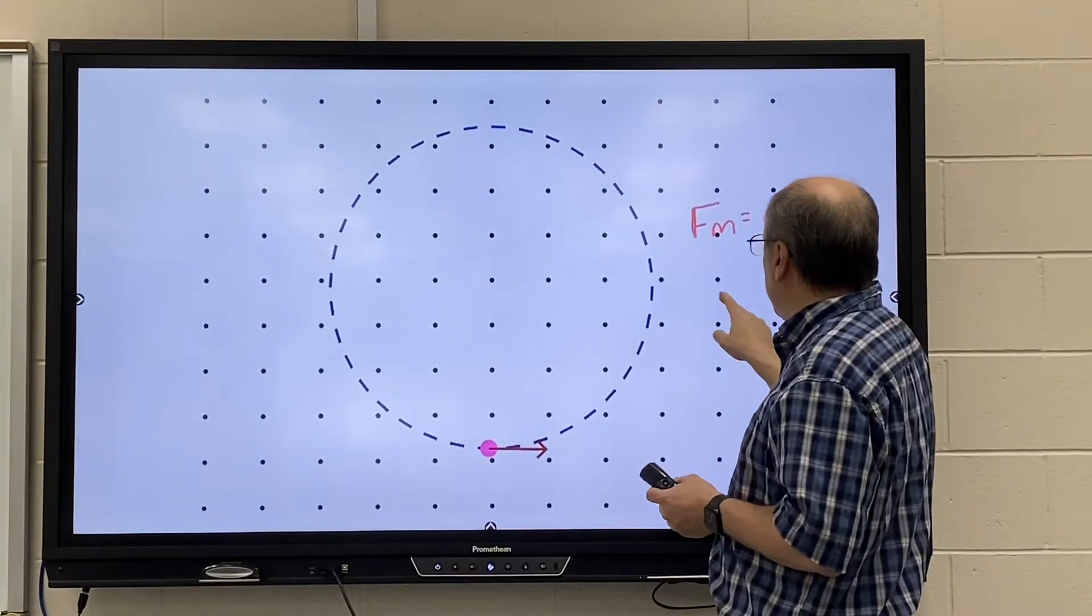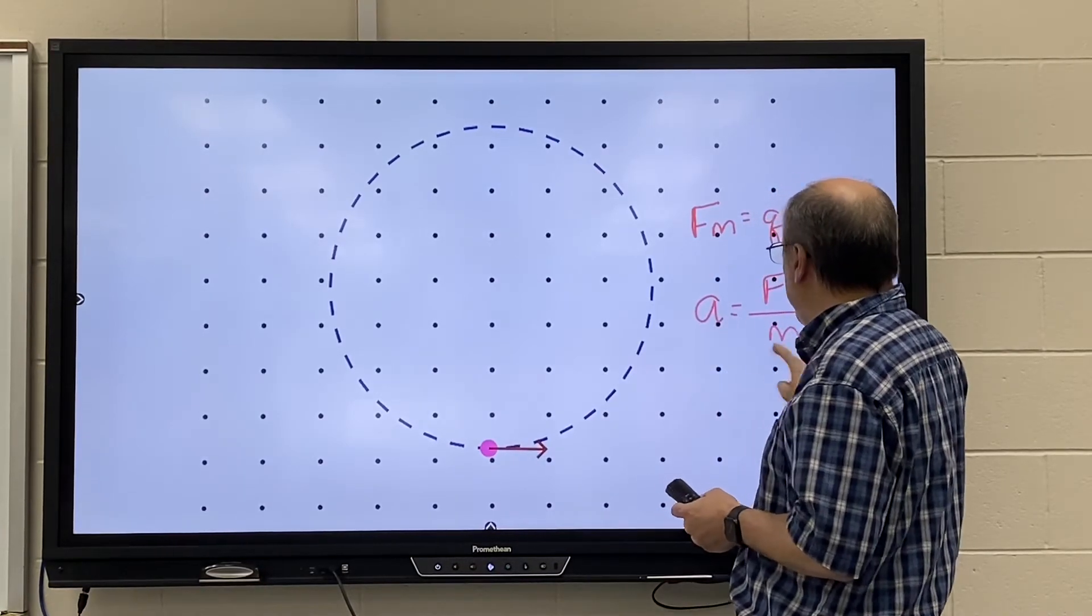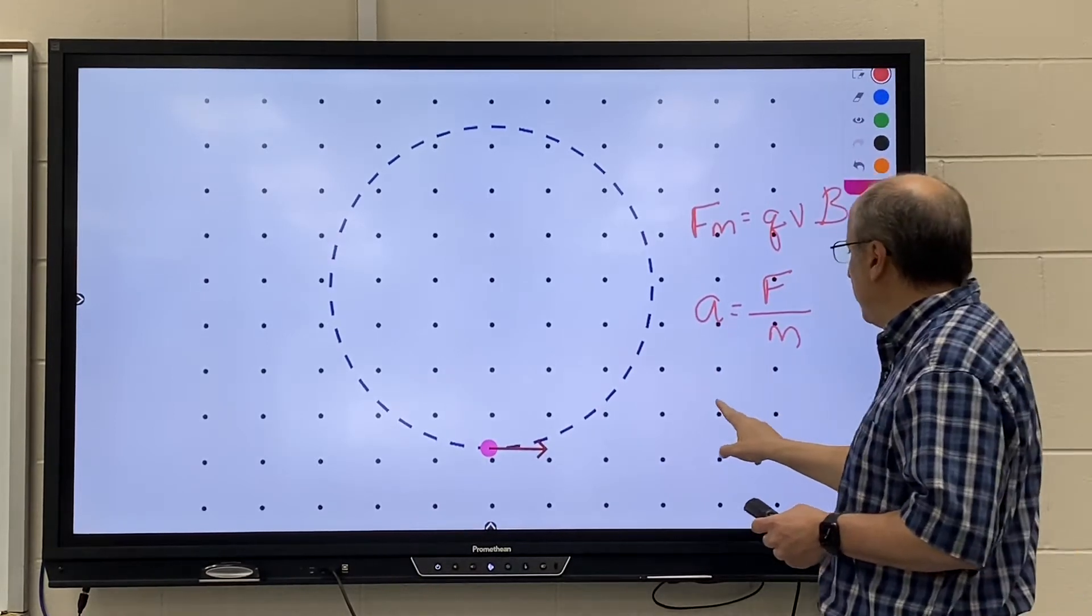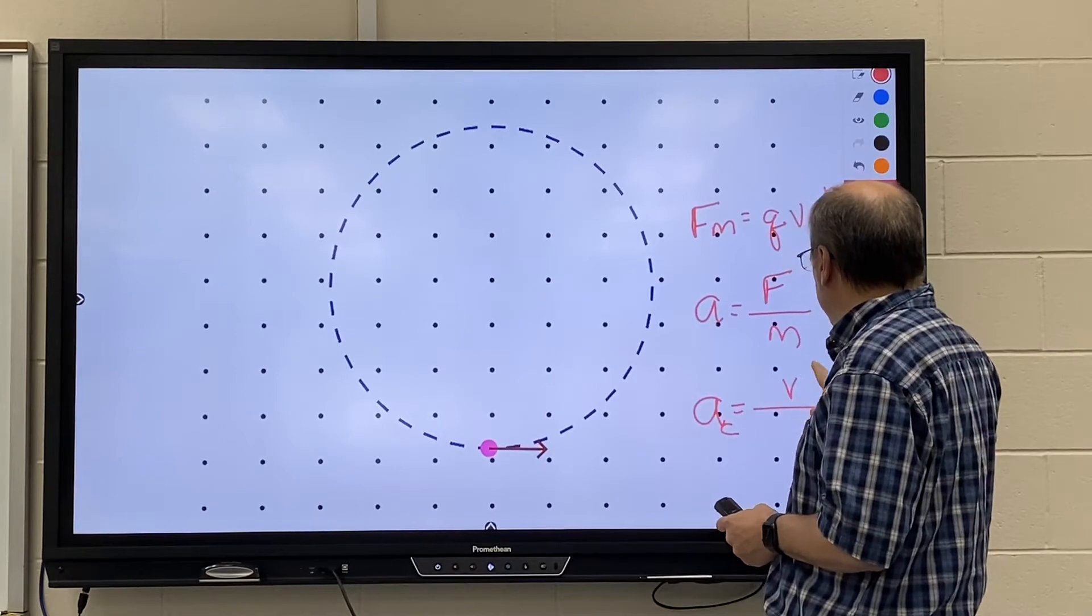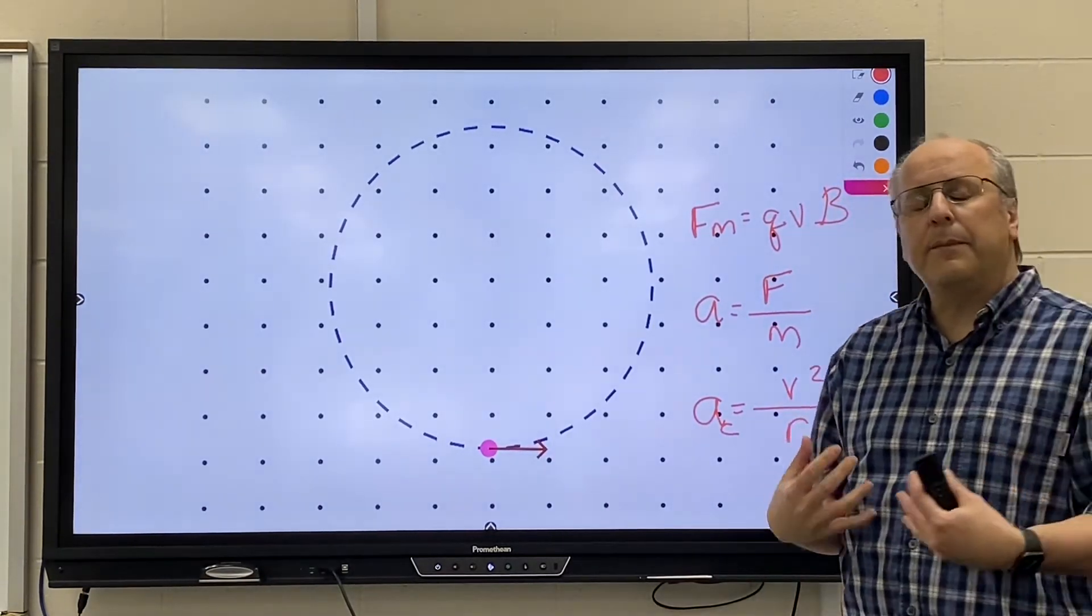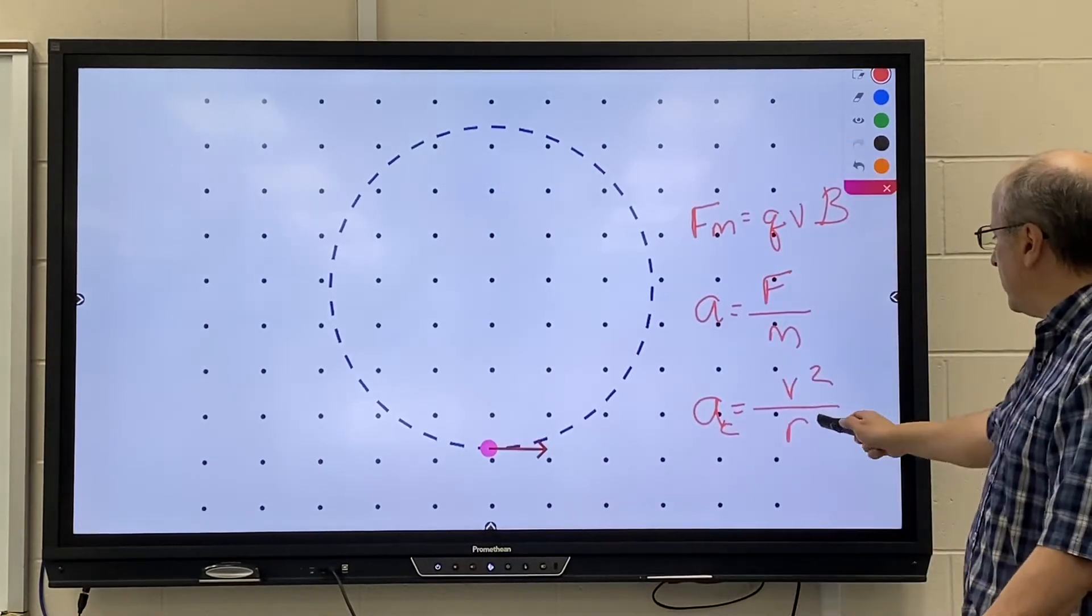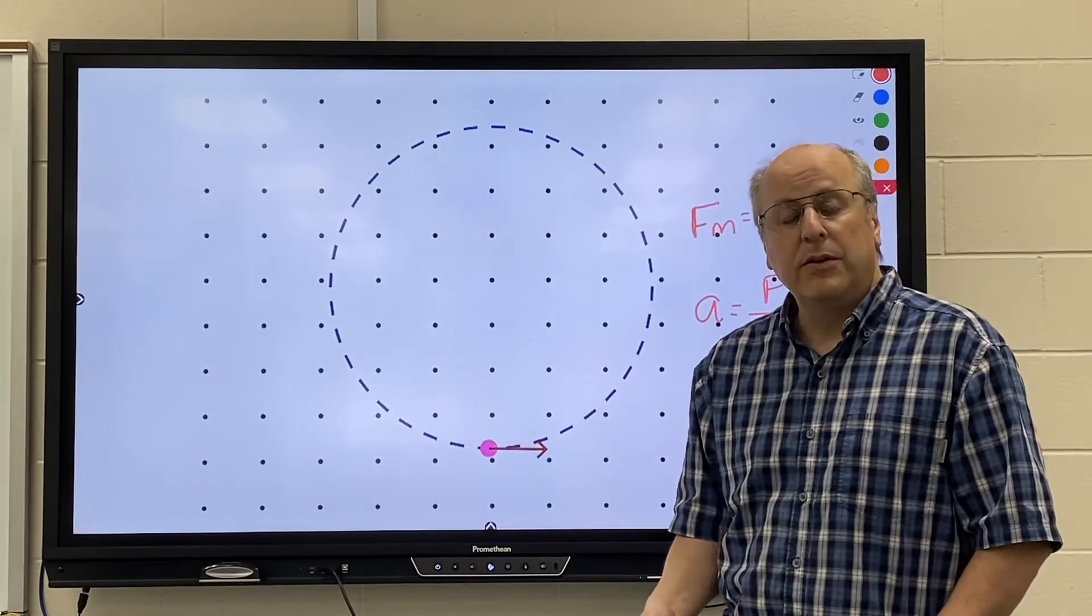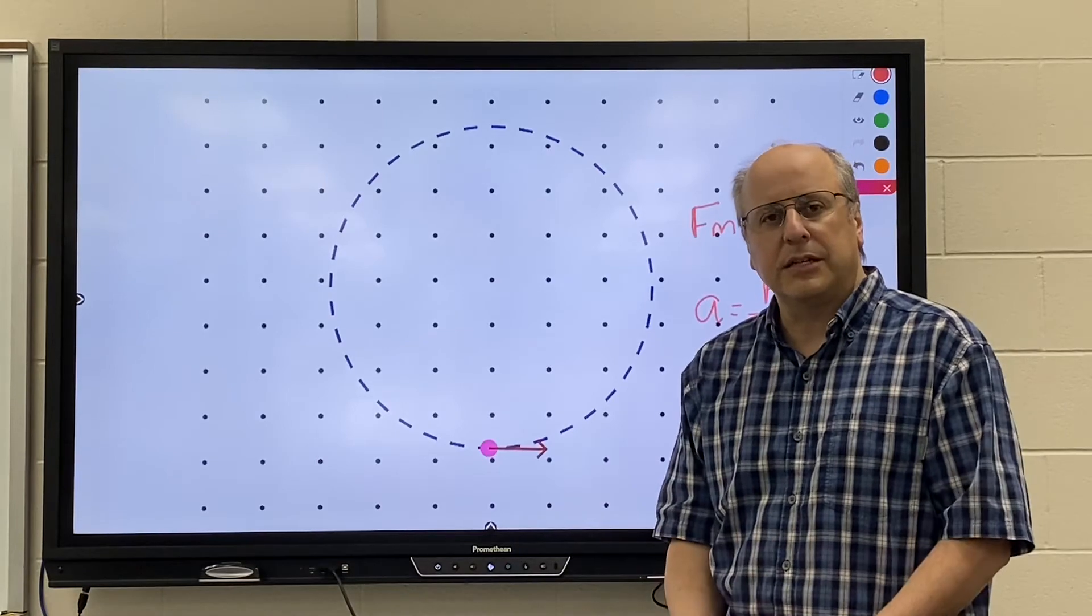We learned that the acceleration equals the force over the mass of the particle, and last year we learned that the acceleration in circular motion is V squared over R. So we'd like to combine all three of these things together to figure out what size circle our particle is going to travel in for a given magnetic field strength and a given velocity of the particle.